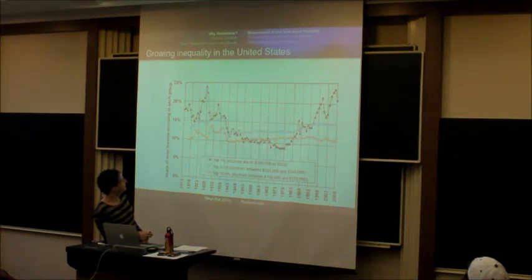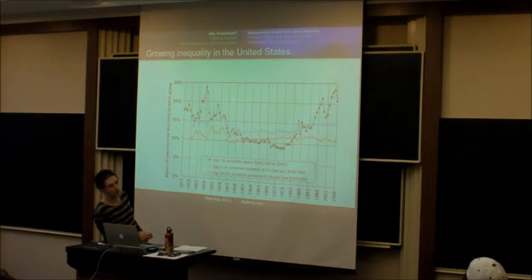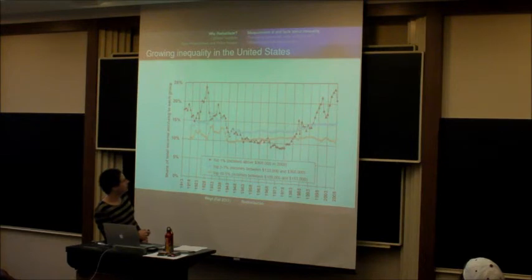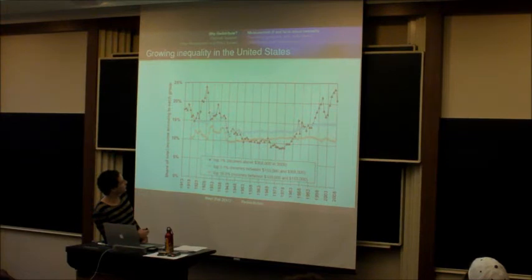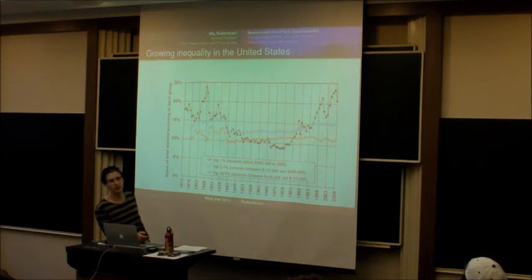Starting in the late 70s and particularly in the 80s, 90s, and 2000s, the share of income taken by the top 1% has absolutely skyrocketed and is now basically up at the historical peak — which was at the height of the stock market boom in the 1920s. People in the 5% to 1% bracket have increased somewhat but not nearly to those levels, and people in the top 10% to 5% range have hardly changed. It's only at the very, very top that inequality has gotten greater.